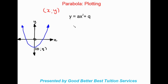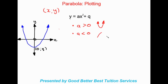The important thing to know about a is that if a is greater than zero, our parabola is shaped like a smiley face. So if a is greater than zero, our graph looks like a smiley face. If a is less than zero, our parabola will look like a sad face — it would be upside down.